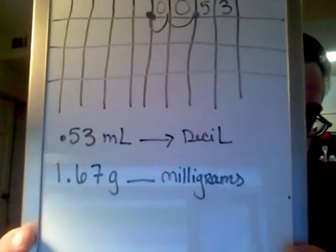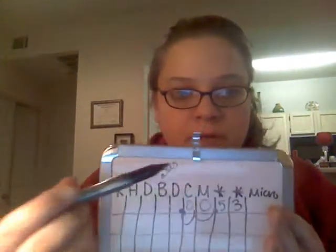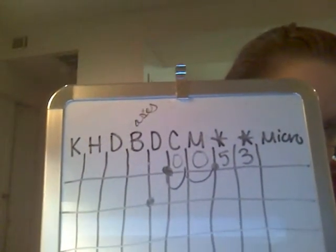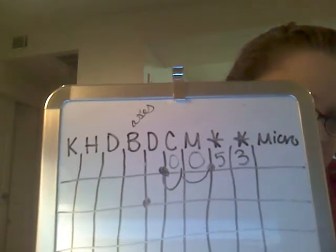Let's do another problem with whole numbers. Let's do 1.67 grams, and we want to go to milligrams — it's just milli, it doesn't have to be milliliters. So we have 1.67 grams going to milligrams. Your grams are your base, which is your B. You put your decimal point right after the B, because remember, the B is where 1 and above go.